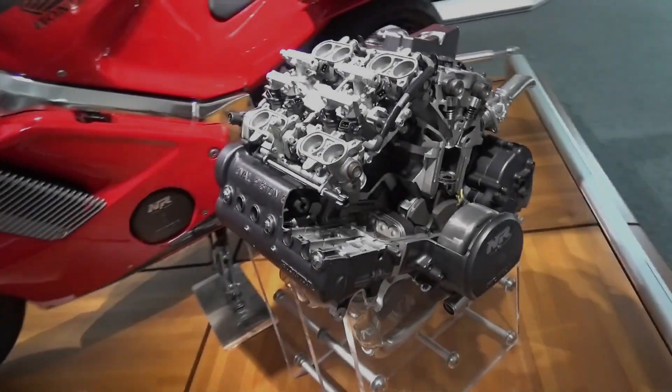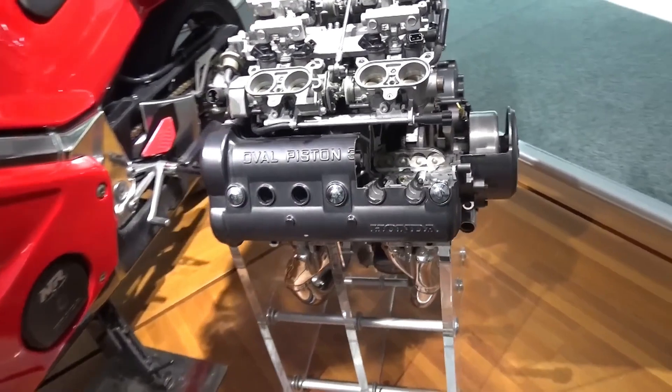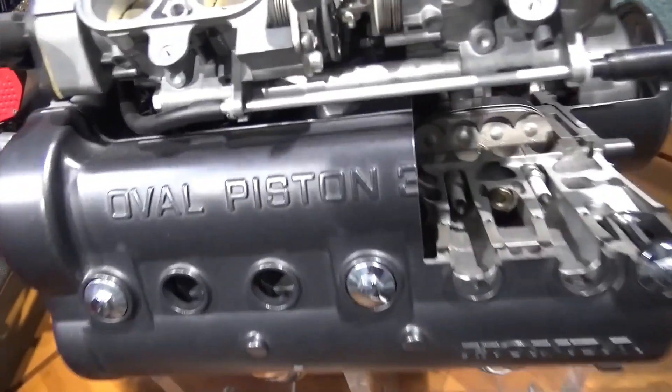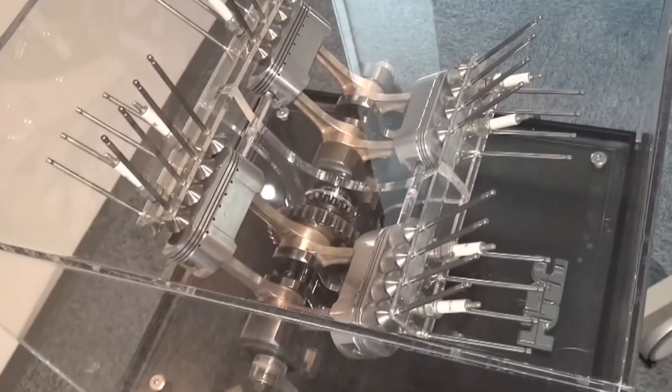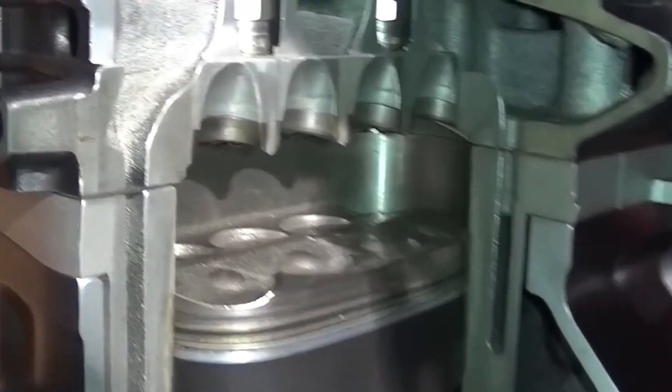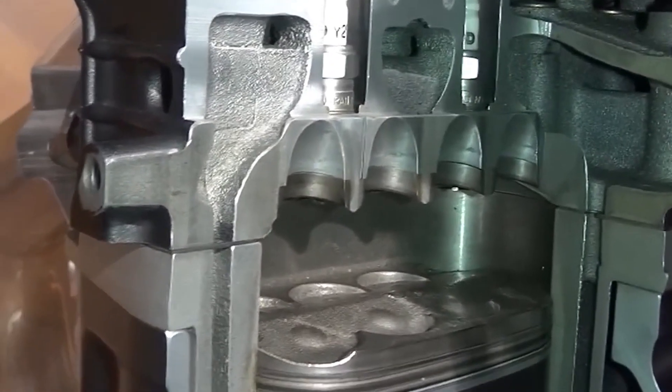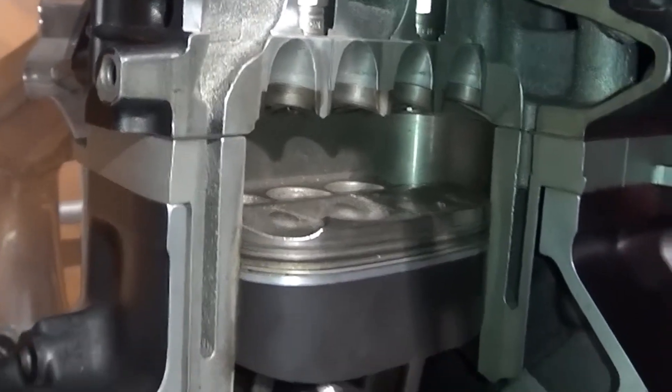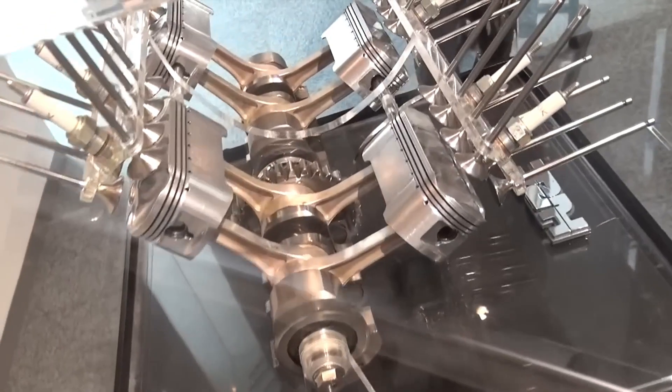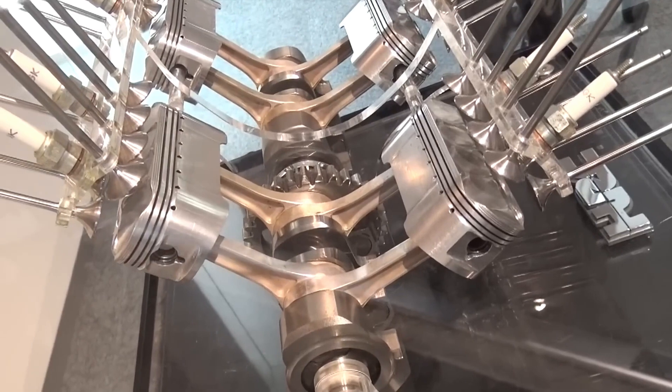This created a V4 engine with oval pistons and eight valves per cylinder. The main idea behind this was that eight valves per cylinder would allow more air to flow in and thus burn more fuel, which was expected to provide a performance advantage.